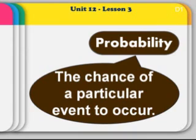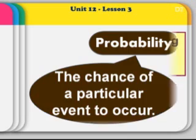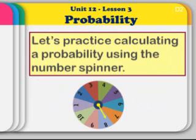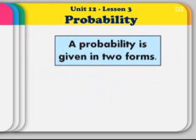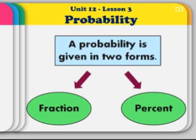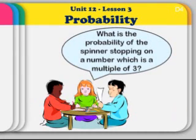We are now ready to start probability. Probability is the chance of a particular event to occur. Let's practice calculating probability using the number spinner. A probability is given in two forms. One form is fraction and the other form is percent. The question is now, what is the probability of the spinner stopping on a number which is a multiple of 3?